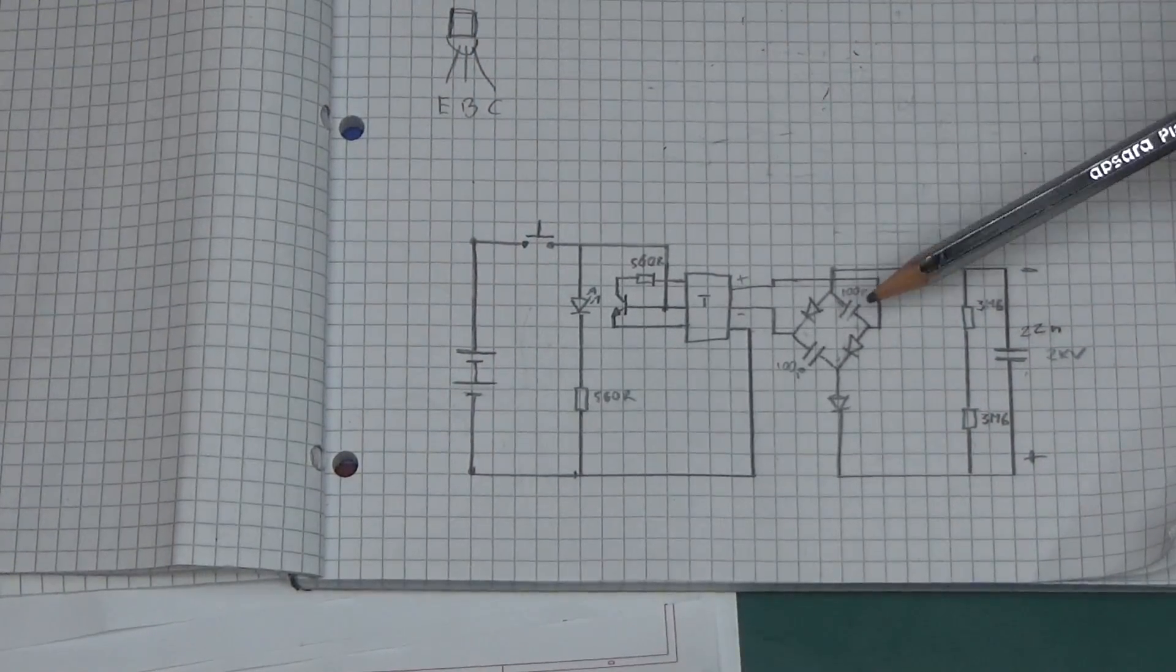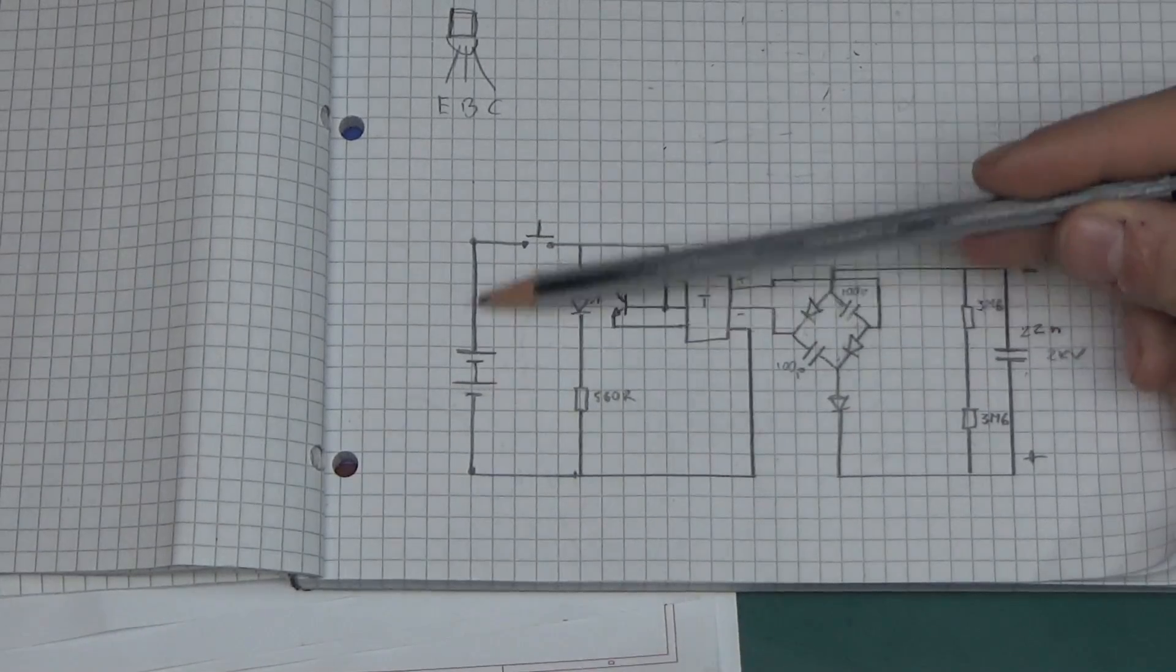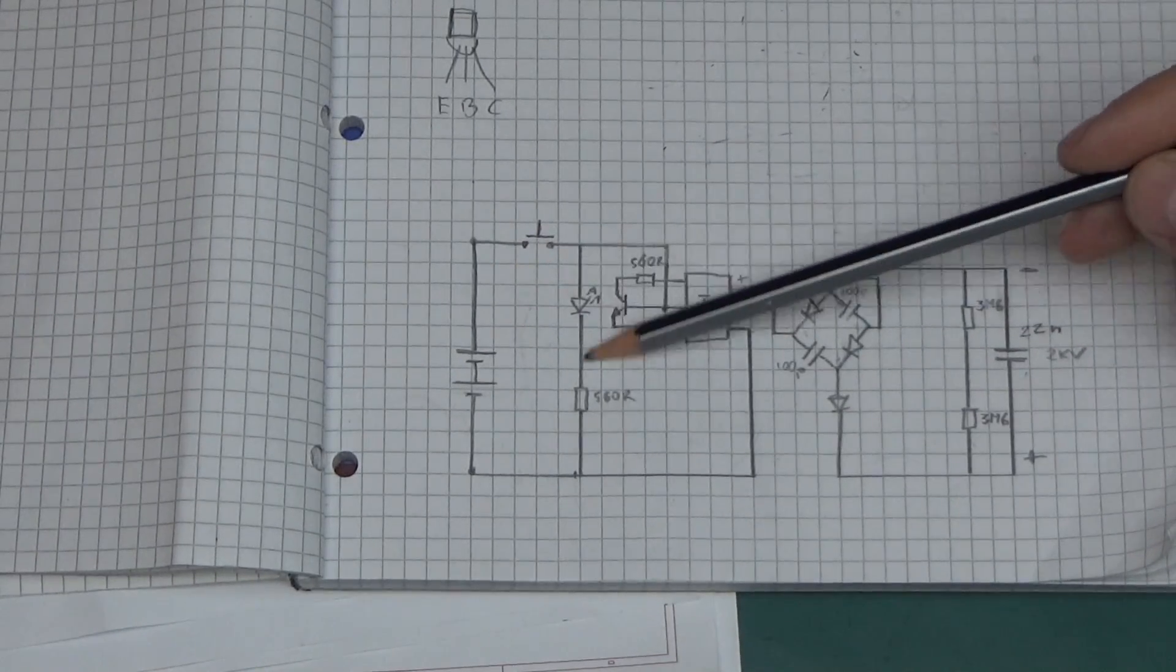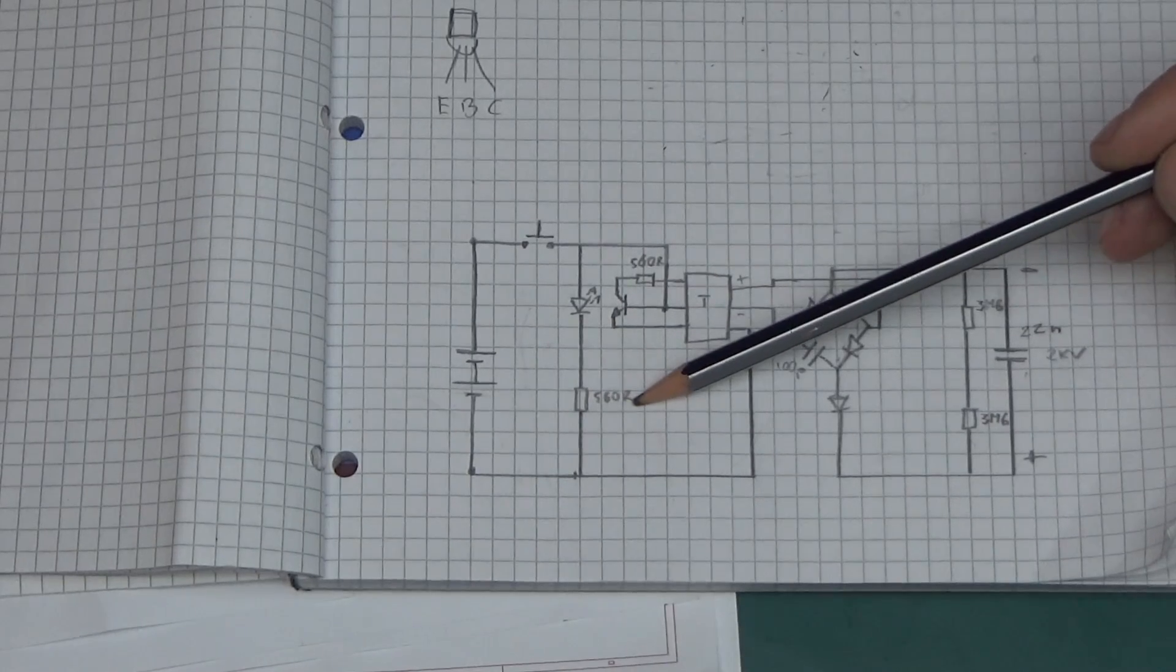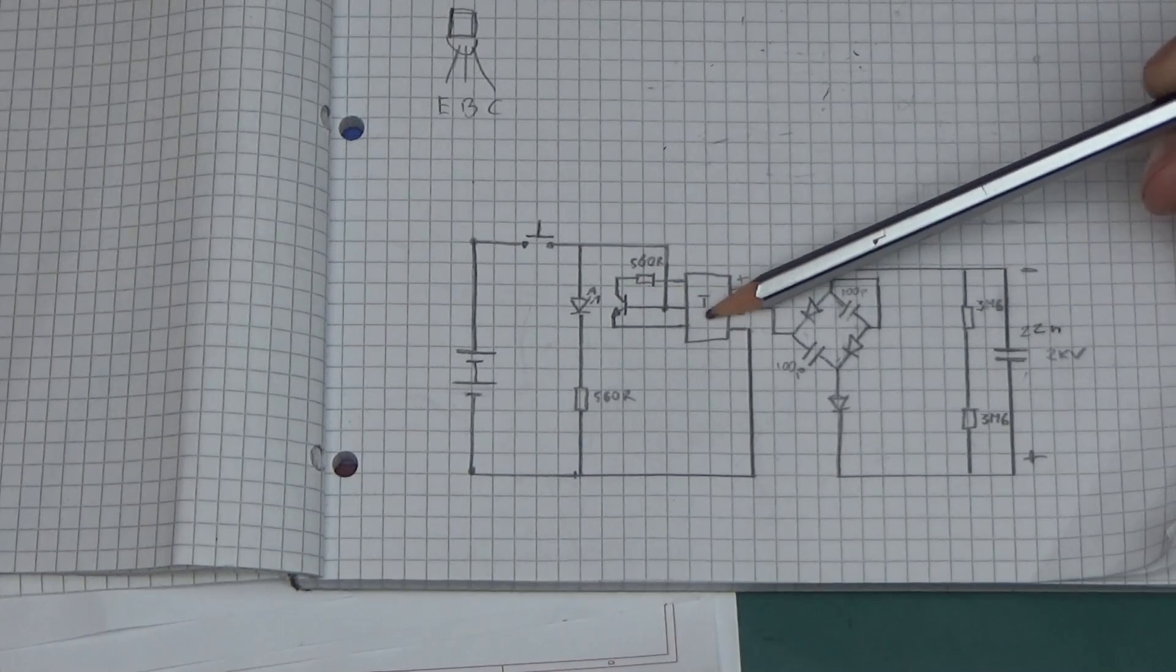I went through my doodles and I drew it somewhat clearer so we can work out what's happening. We've got two batteries in here, a push button switch, then we've got the LED with a 560 ohm resistor in series. That just lights up when you press the button. Then we've got the transformer.